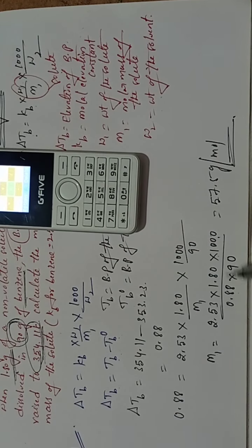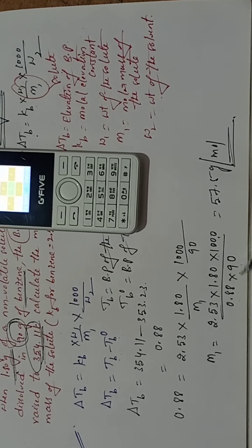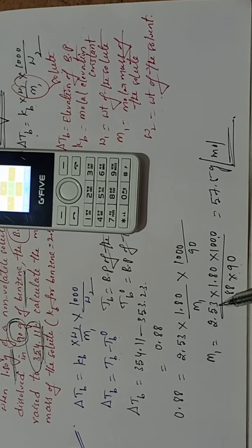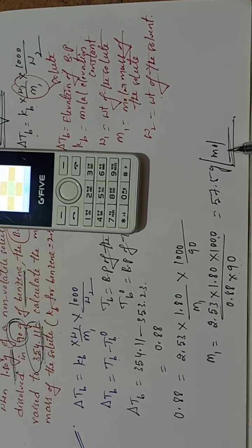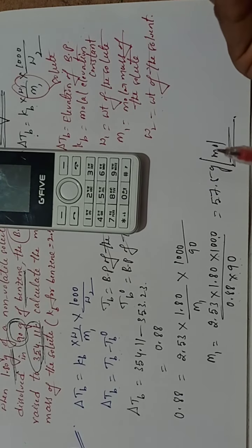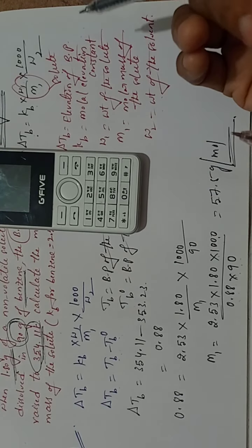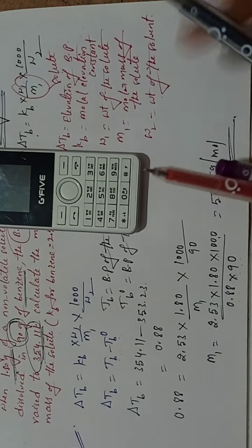To use a calculator: multiply the numerator (2.53 × 1.80 × 1000) and divide by 0.88, then divide by 90. You will get 57.5 gram per mole. Thank you students — I hope you liked this video. Please like, share, comment and subscribe to my channel.